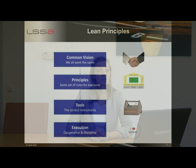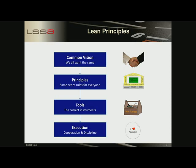Lean involves the development of a common vision, which is the direction the company needs to take for future success. Next to a common vision, there needs to be shared principles within the company. These rules should be the same for everybody, including management, who should walk the talk.